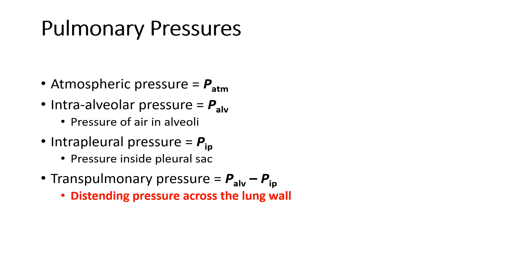The transpulmonary pressure is also described as the distending pressure, and this value should always be negative — the intrapleural pressure must always be less than alveolar pressure. This is the ease with which the lungs want to inflate, and also how hard the lungs resist during expiration. If I increase intrapleural pressure, transpulmonary pressure decreases and it's hard to inflate the lungs. If I decrease intrapleural pressure, transpulmonary pressure increases and it's easy to distend the lungs.